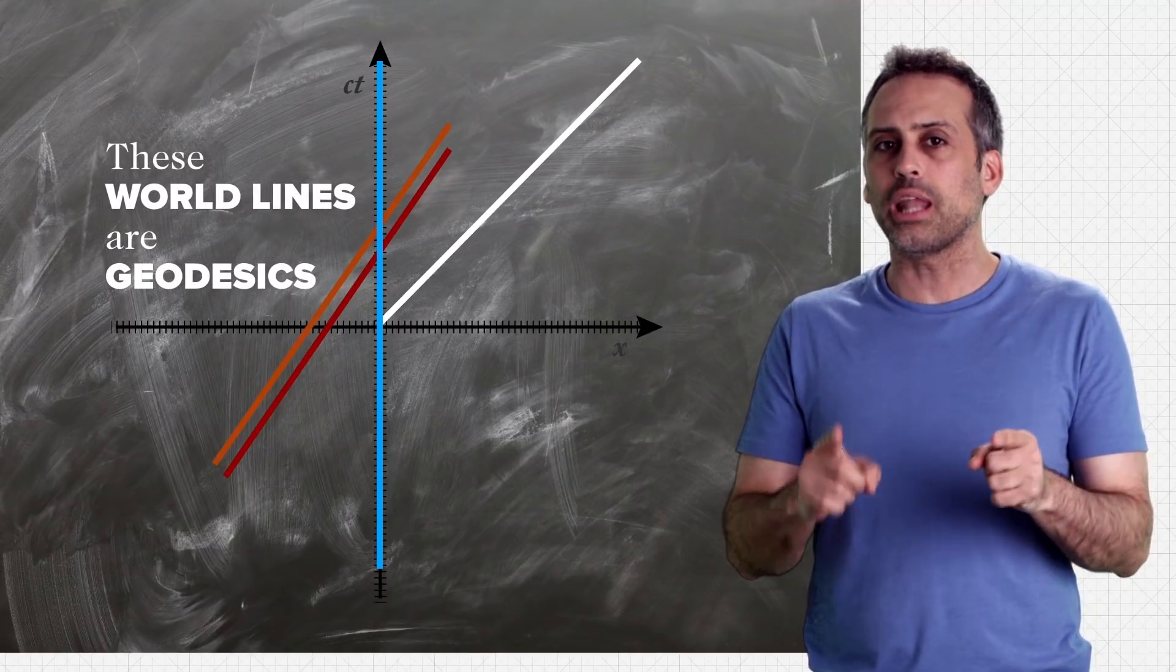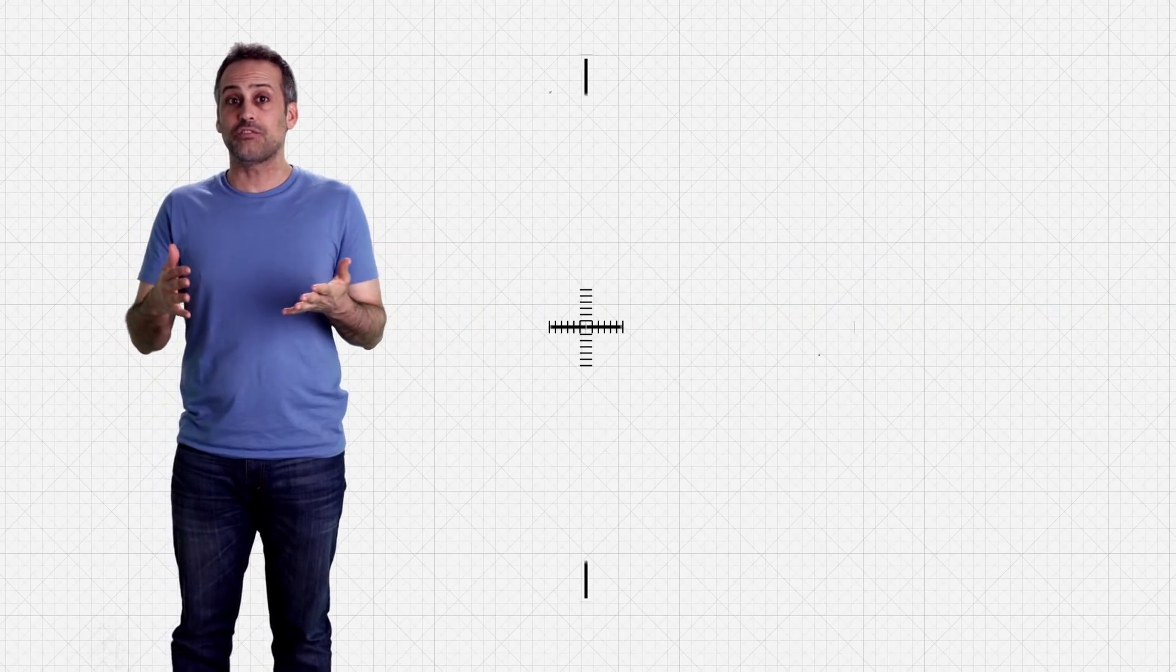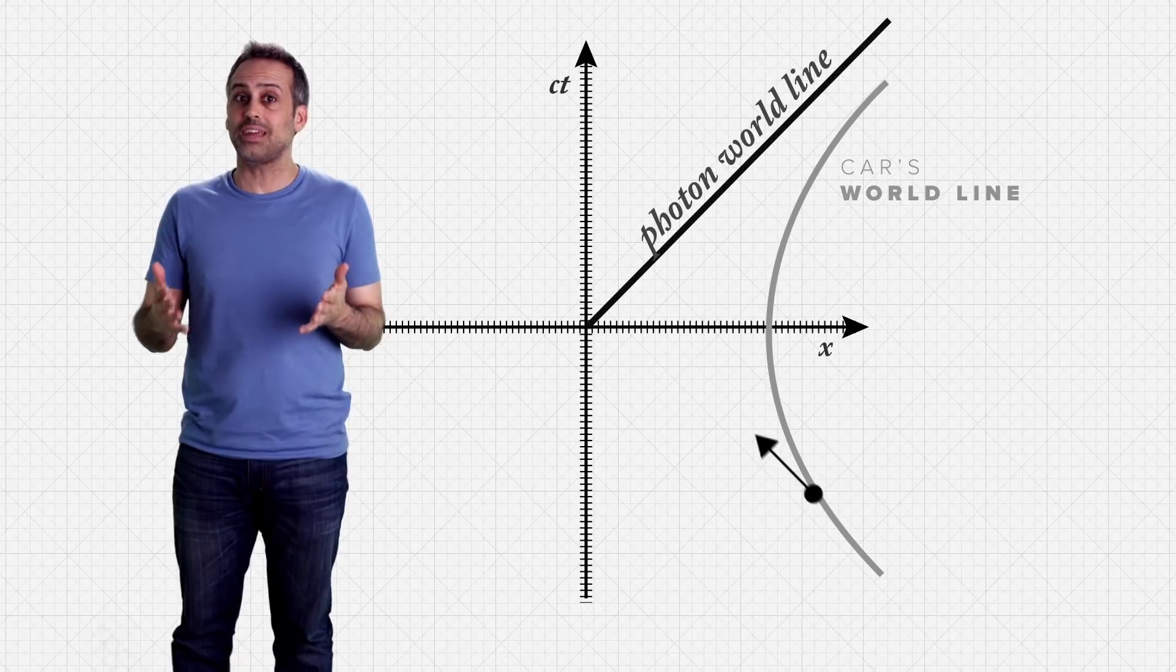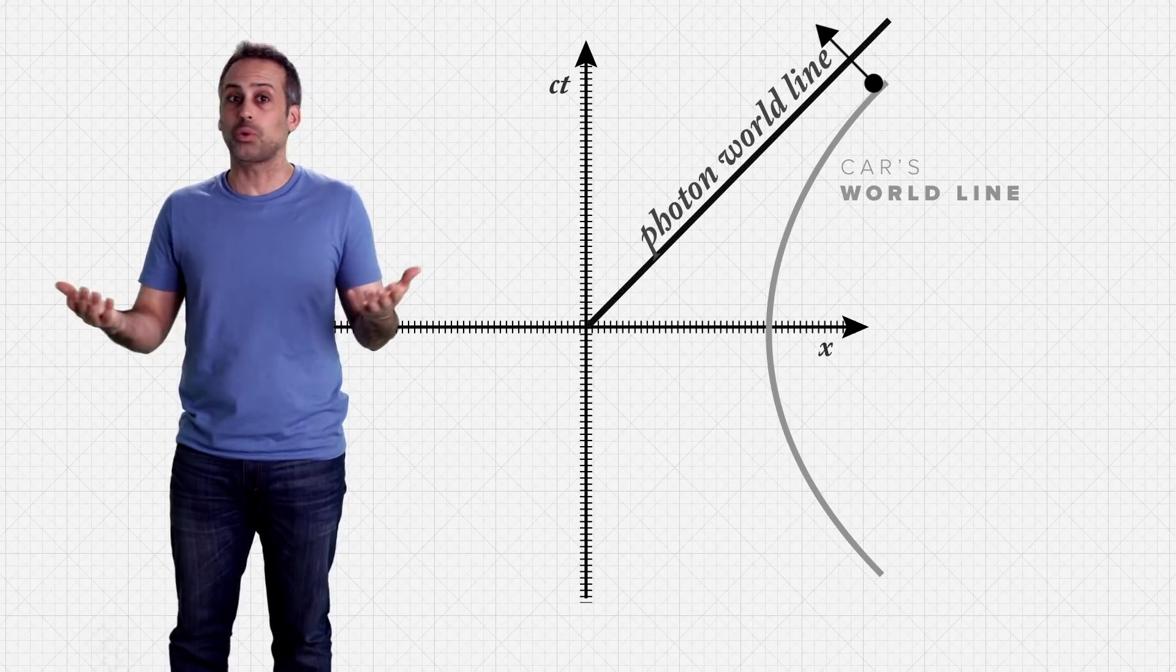However, not all world lines are geodesics. Suppose I see a car approaching me, slowing down, turning around, and speeding away. A tangent vector to its world line doesn't stay tangent under parallel transport. So it's not a geodesic.